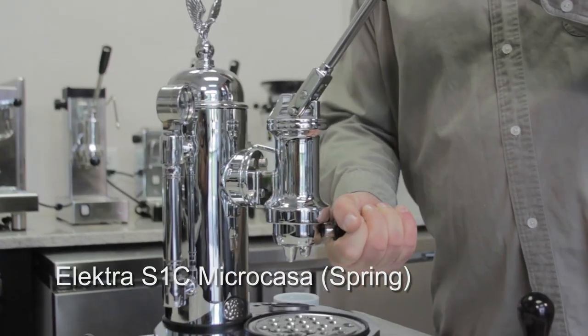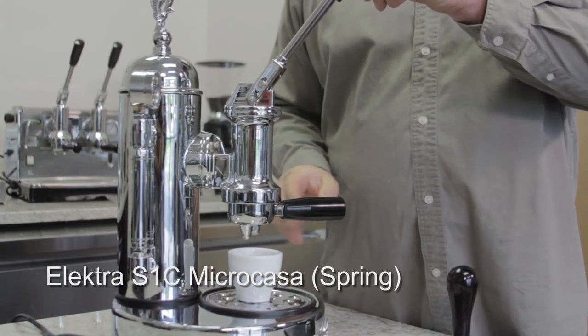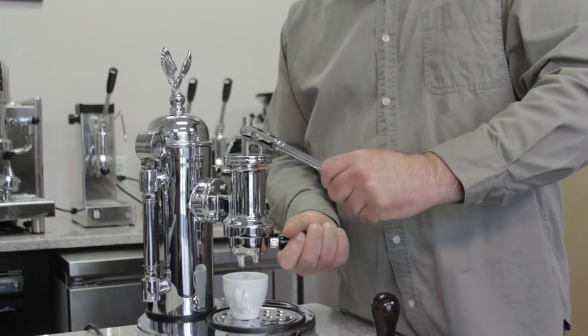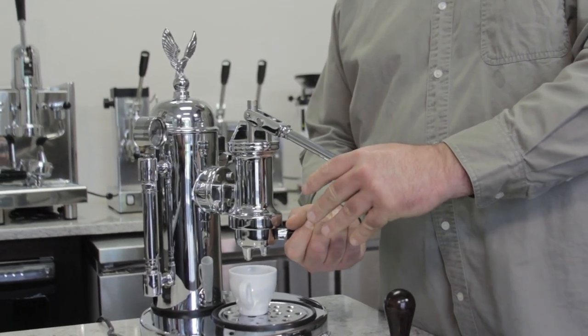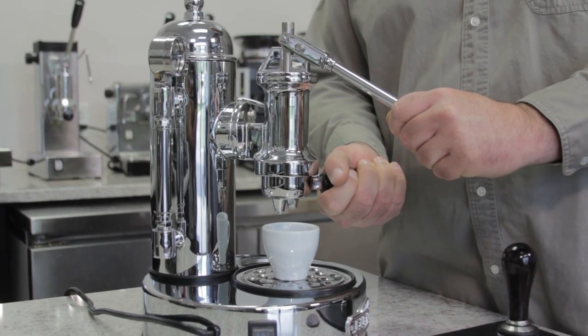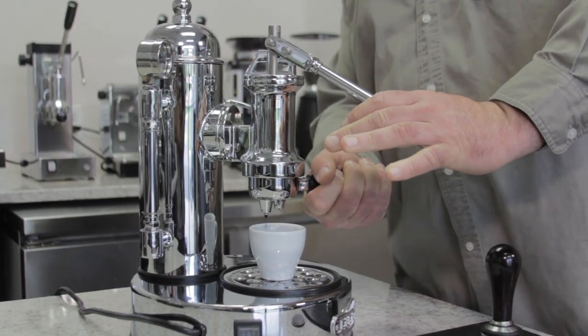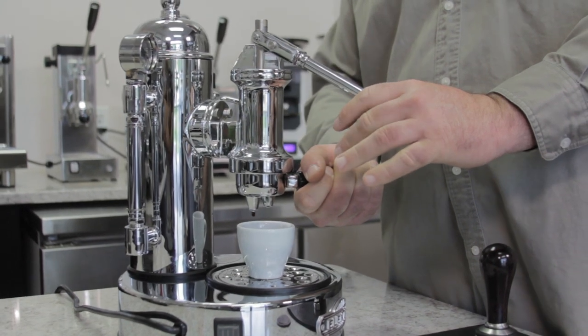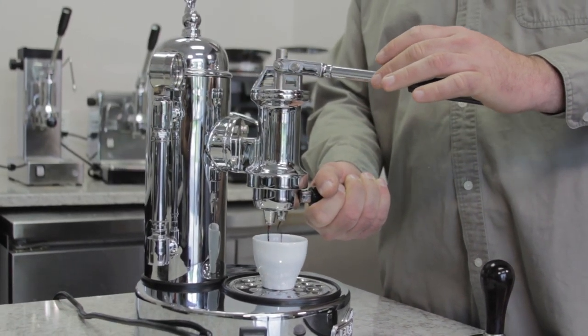Lock the portafilter handle on the group head nice and tight. Put a nice warm cup underneath the group head handle. Pull the lever down in the down position. You actually have to use your left hand. This is my pet peeve because I'm actually a righty. Again, hold the portafilter handle in place so it doesn't pop off. Once you have a few drips of espresso, that means the piston area is filled. And then we'll guide the lever up.